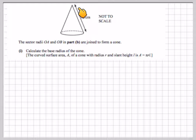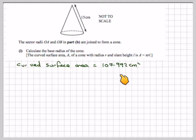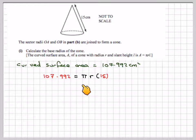This is no longer the radius, this is actually the slant height. What we've got to do is calculate the radius of this cone here. The curved surface area is 107.99 centimetres squared, the area of the sector from the previous part. So 107.992 equals pi r times L, which is 15.